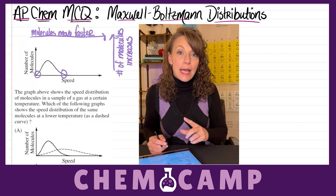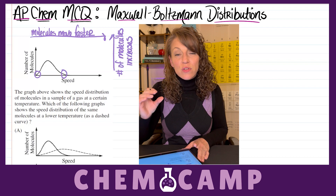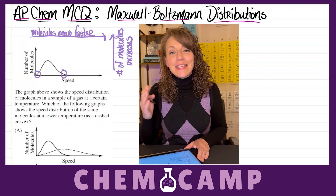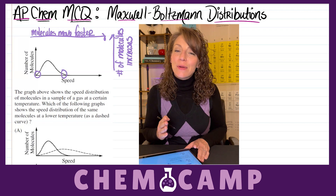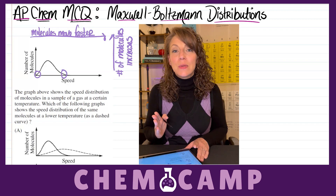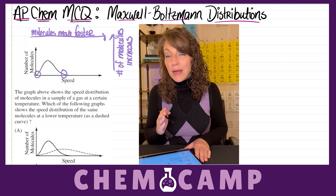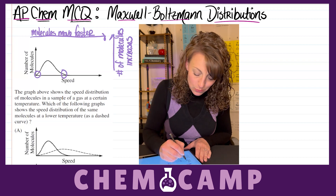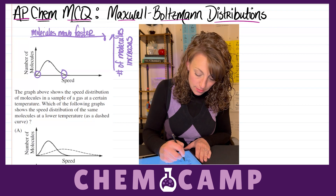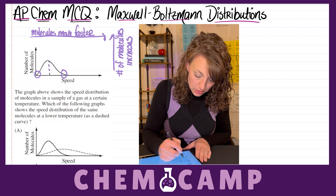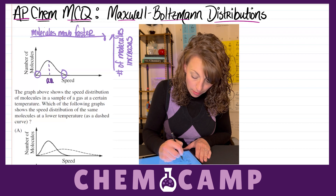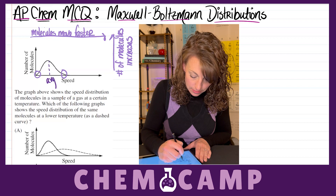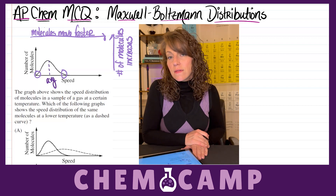However, it's not — it's got a bit of a tail to the right side of this curve. That tail to the right is actually going to bring the average speed ever so slightly to the right of the peak of the curve. So one might estimate the average speed to be approximately just to the right of the peak of the curve.